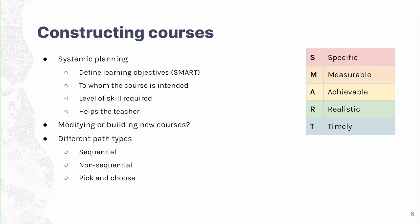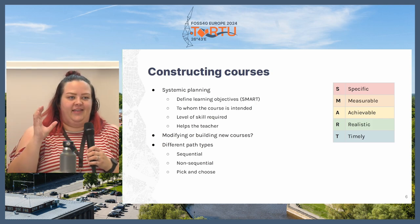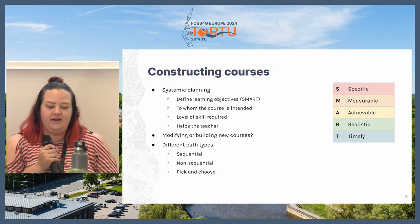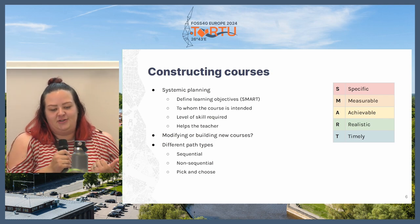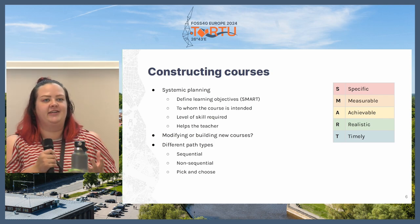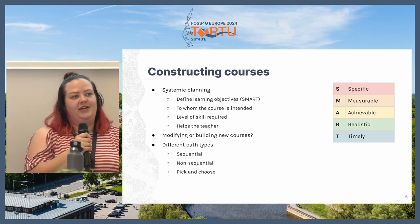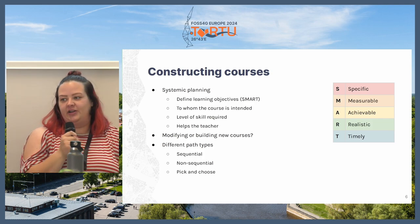When constructing your courses or learning paths, there are a few things to keep in mind to get the planning to go smoothly and to get something that the student is happy to follow. Firstly, systematic planning is crucial. You need to develop interconnected courses so that when the student completes one course, they know what to expect from the next course and it is seamless to continue.